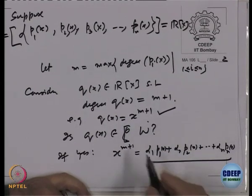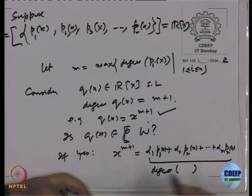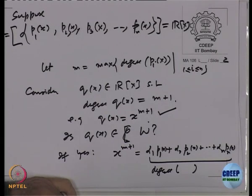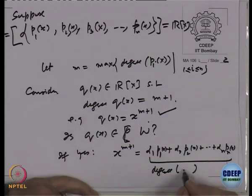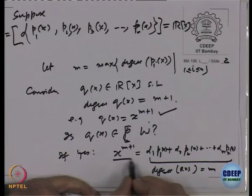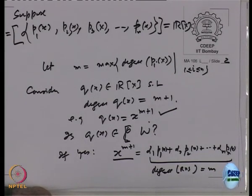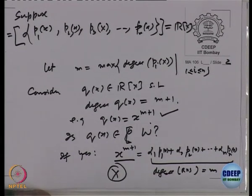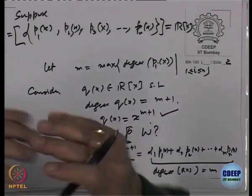Now, what is the degree of the right-hand side? M is the maximum degree of all Pi's, so the degree of the right-hand side is at most M. But the degree of the left-hand side is M+1. This is a contradiction — a polynomial of degree M+1 cannot equal a polynomial of degree M.